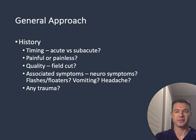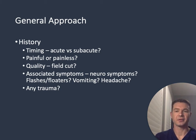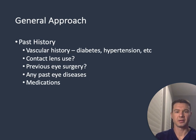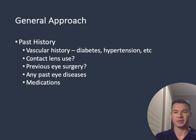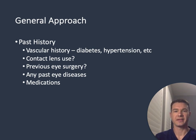Is it just a portion of their field of vision or was it the entire field of vision? Were there any associated symptoms such as neuro symptoms, flashes or floaters, vomiting, headache? Was there any trauma? It is also important to obtain their past medical history with a focus on their past eye history. Get a good vascular history — do they have diabetes, hypertension? Are they a contact lens wearer? Have they had previous eye surgery or any previous eye diseases diagnosed? And are they taking any medications?